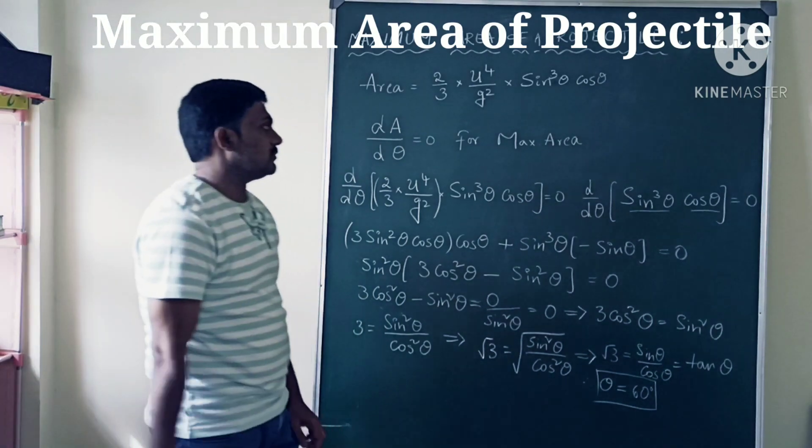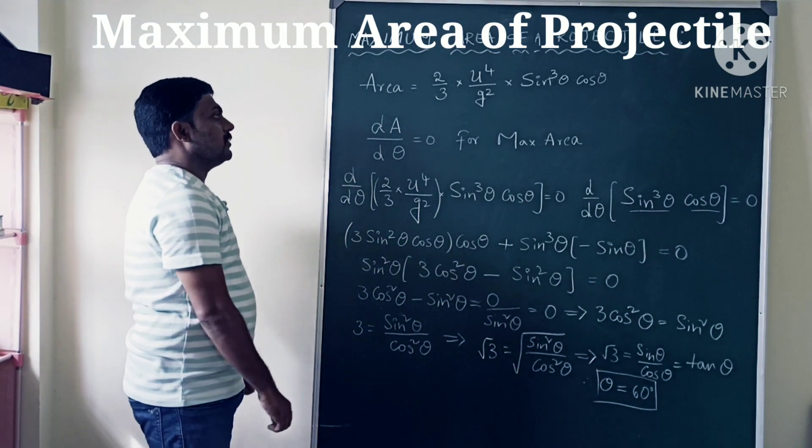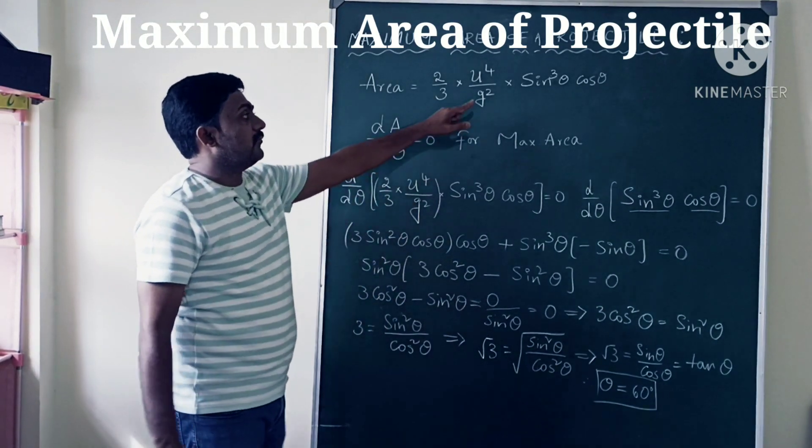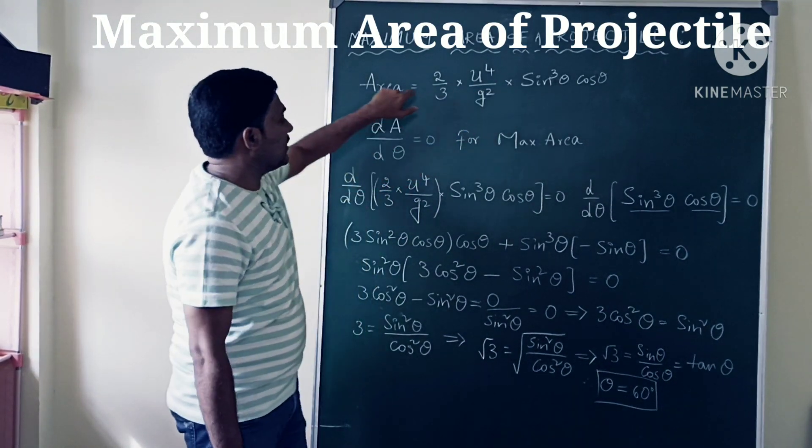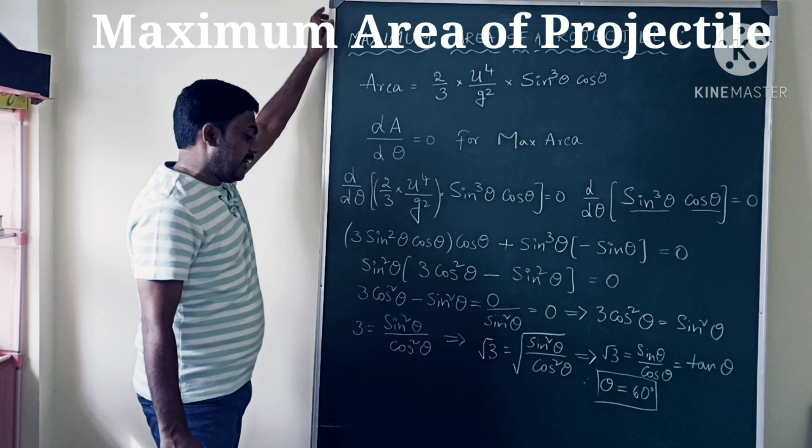So when θ = 60 degrees, the area is maximum.